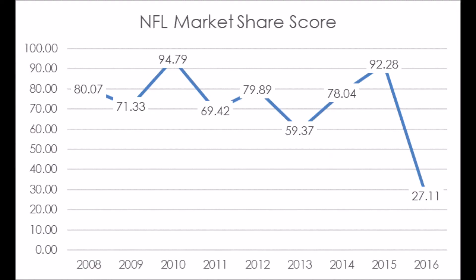Then we get to Darren McFadden's production, and he's had honestly an up-and-down career. Looking at his NFL total offensive market share production, from 2008 to 2009 he was around 80.07 and 71.33 — kind of middling during that time. But he had a big year in 2010 with a 94.79 score, battled injuries in 2011 and 2012, and was at his lowest point in 2013 with a 59.37. But his production started to creep up again, reaching 78.04 in 2014, and in 2015 he had a 92.28 overall production score on the Dallas Cowboys.